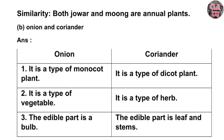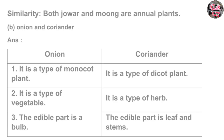B. Onion and Coriander — make two columns. Onion is a type of monocot plant; Coriander is a type of dicot plant. Onion is a type of vegetable; Coriander is a type of herb. The edible part of onion is the bulb; the edible part of coriander is the leaves and stems. Similarity: both onion and coriander are annual plants.